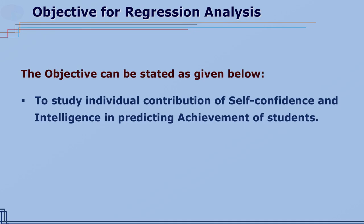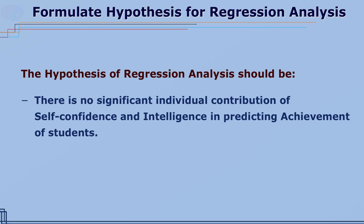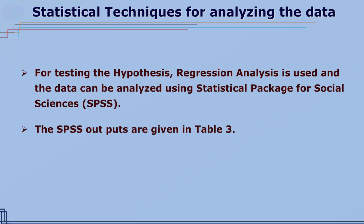Let us take another example. The objective is to study the individual contribution of self-confidence and intelligence in predicting achievement of students. For this objective, the hypothesis can be formulated in the null form. The data can be analyzed with the help of regression analysis using SPSS. The SPSS output is given in table 3.